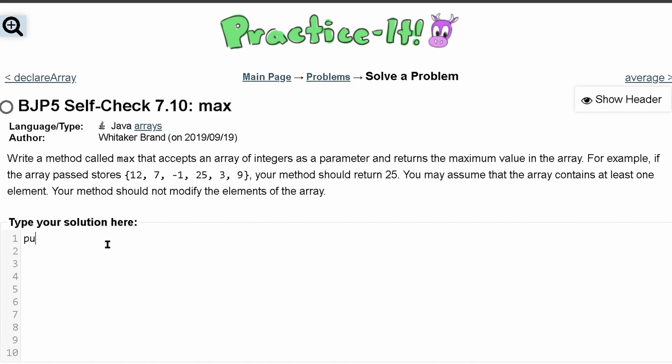So we'll make it public and we'll call it not void but int because it needs to return an integer. Its name is max and we are taking in an array.